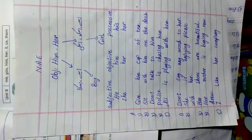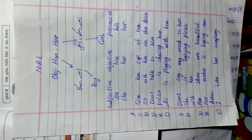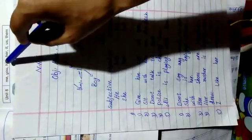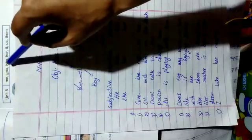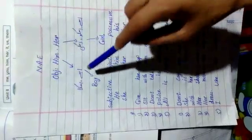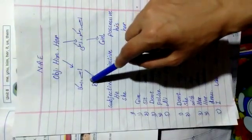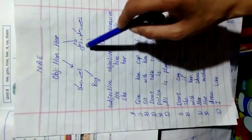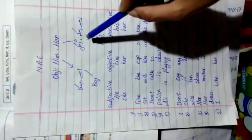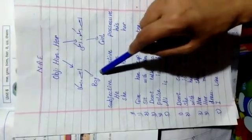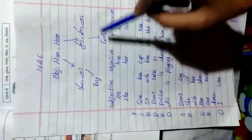Assalamualaikum students, today's lecture is on unit number eight. In our previous lecture we discussed two concepts, and today we are going to discuss the next two concepts: him and her. Him means 'ushe' or 'uska', and her means 'ushe', 'usko', or 'uski'. Him we use for a boy and her we use for a girl.